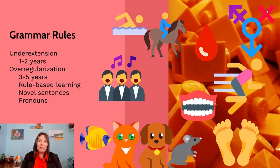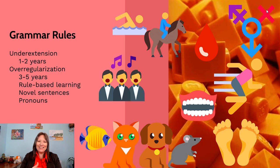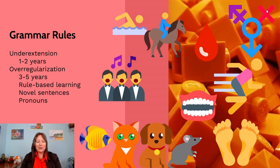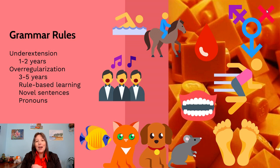They might think other dogs would have different labels. Thinking back to cognitive development, their schema for dogs is super limited and they're not sure what else fits in that schema. Under-extension is pretty typical, but once we get past it, we often do what's called over-extension or over-regularization.